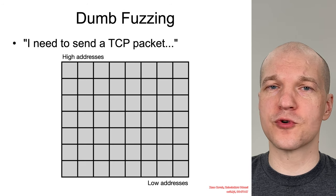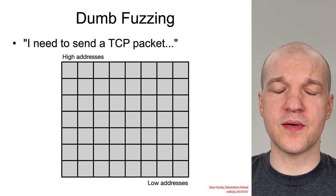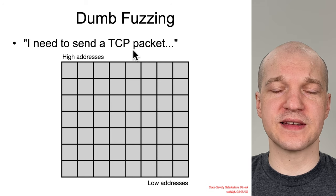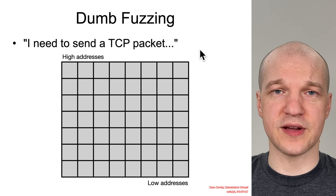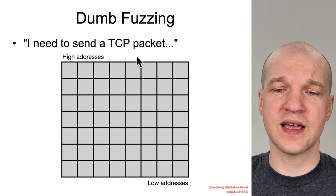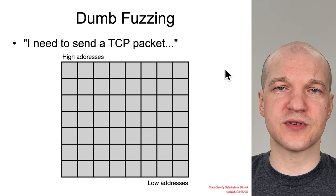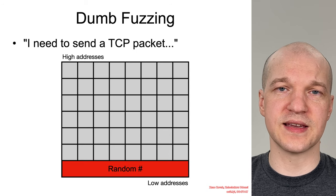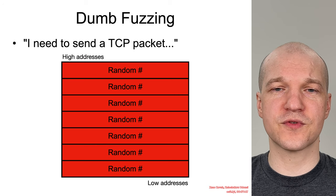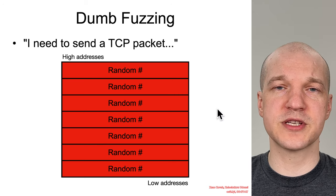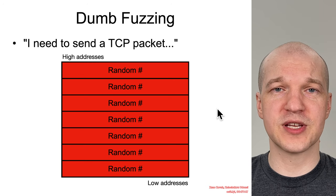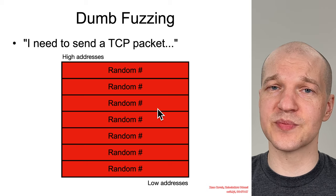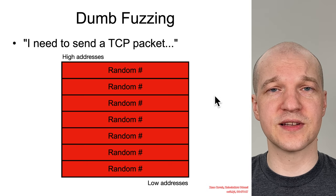There are a variety of different forms of fuzzing. We'll start with dumb fuzzing, which is just truly random data. For instance, if an attacker wanted to compromise software parsing TCP packets, they might just feed a bunch of randomized data into that, not caring about the structure. Quite often that will be enough to cause a crash, which they can analyze to see if it leads to a security vulnerability.